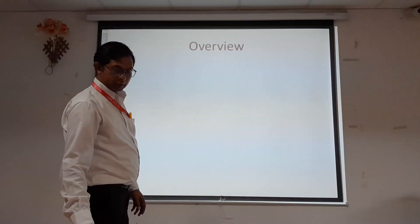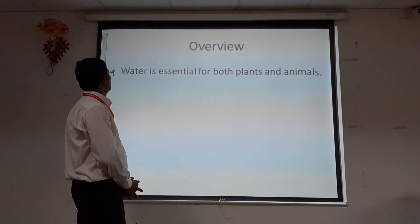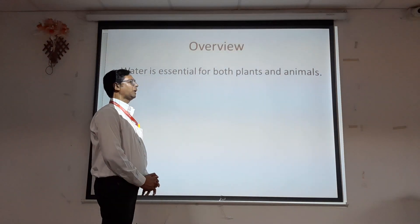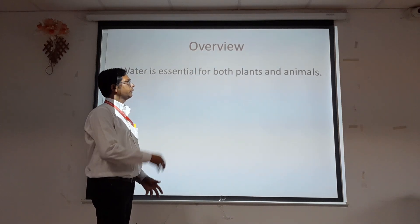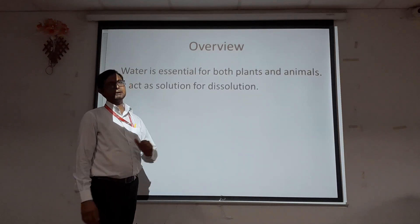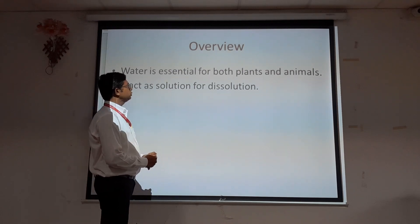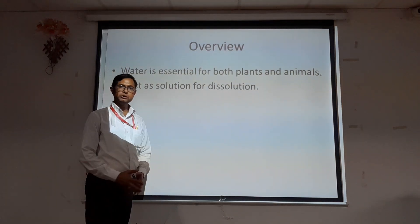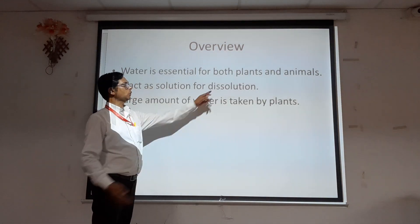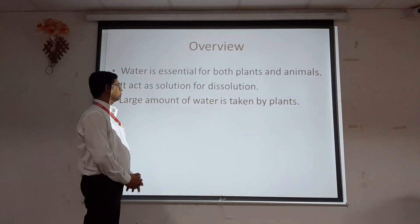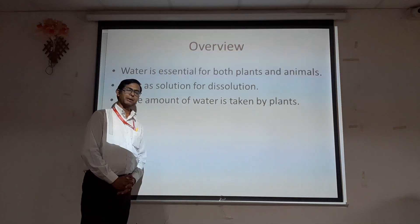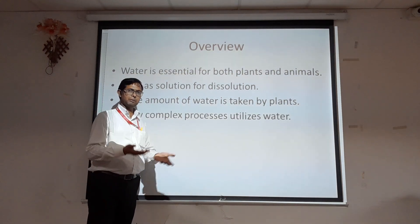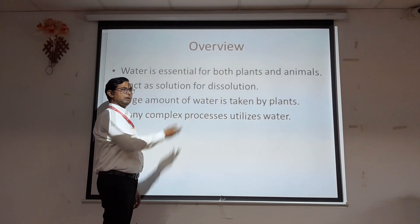What is plant water relationship? Water is essential for both plants and animals, and for different organisms as well. Water acts as a solvent for dissolution — different types of substances get dissolved in it and play important roles. A large amount of water is taken up by plants; depending on the type of plant, the amount varies, but generally it is in a large amount.